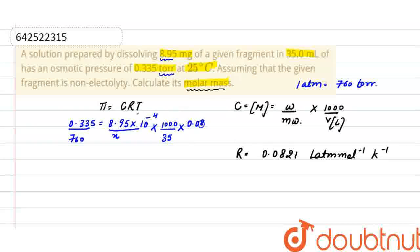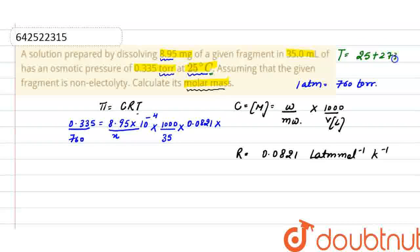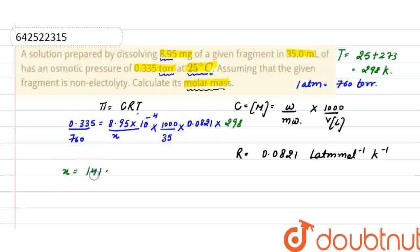The gas constant is 0.0821, and temperature is given in degrees Celsius, so we convert it into Kelvin by adding 273, giving 298 Kelvin. Putting all the values in and solving, the molar mass comes out to be 14,193 grams per mole.